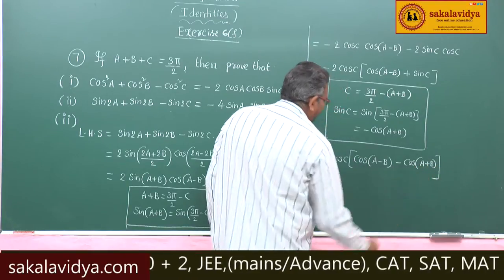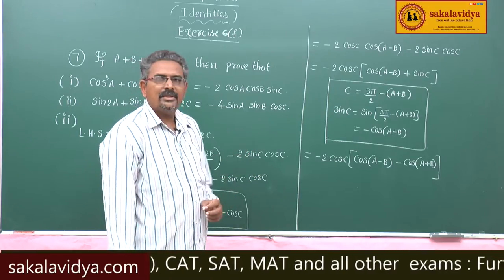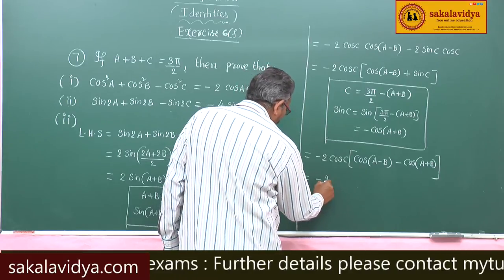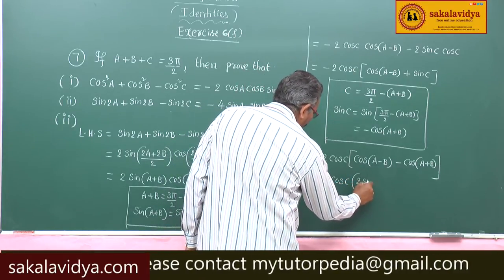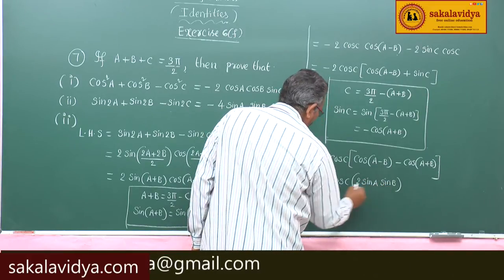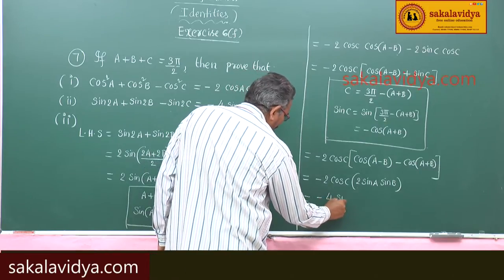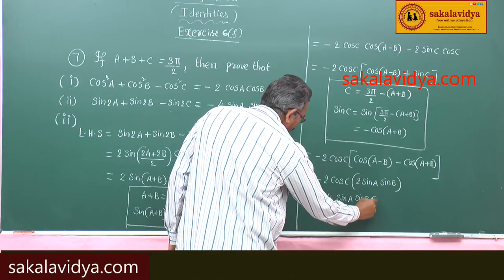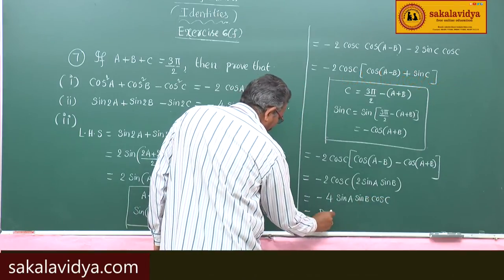So cos(a minus b) minus cos(a plus b) is nothing but 2 sin a sin b. So this becomes minus 2 cos c times 2 sin a sin b, giving us minus 4 sin a sin b cos c. So this is the RHS.